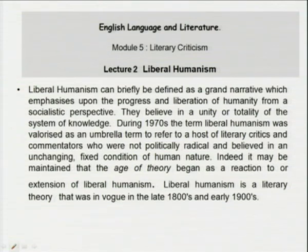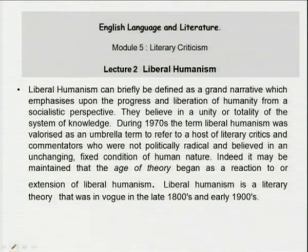Liberal humanism can briefly be defined as a grand narrative — it is also an umbrella term — that emphasizes the progress and liberation of humanity from a socialist perspective. They believe in a unity or totality of the system of knowledge, how knowledge emanates from man and from his idea of selfhood. During the 1970s, the term 'liberal humanism' was valorized as an umbrella term to refer to literary critics and commentators who were not politically radical and believed in an unchanging, fixed condition of human nature.